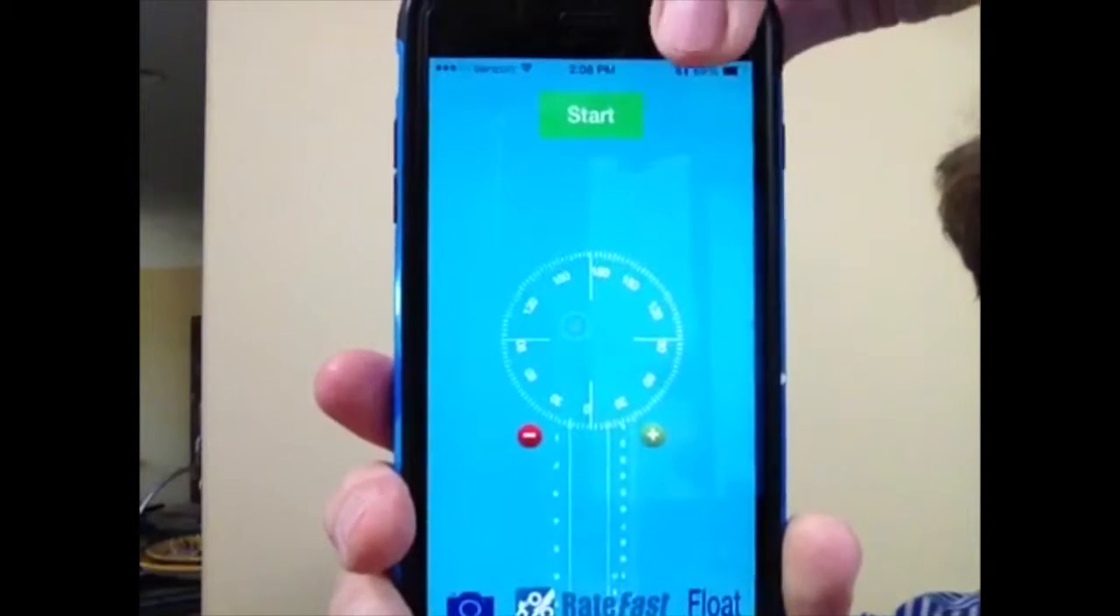To begin the measurement process, simply tap the button on the top, start, and the Goniometer is now in measurement mode.